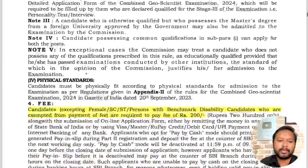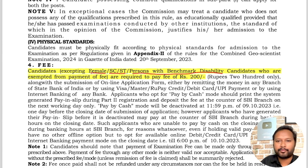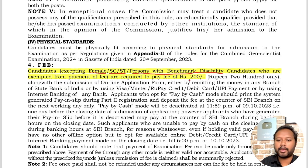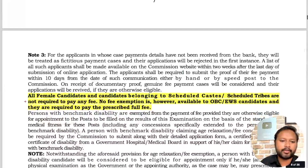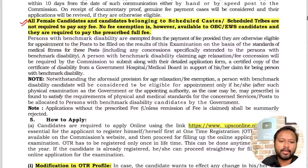Regarding application fees: female candidates, SC/ST candidates, and persons with benchmark disability are exempt from paying any fees. Male candidates in the General and OBC categories are required to pay 200 rupees as the application fee. OBC and EWS candidates are not exempted and must pay the full prescribed fee.